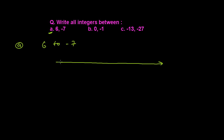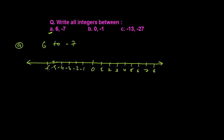If you see, the number line looks something like this. Suppose this is 0, then going right: 1, 2, 3, 4, 5, 6, 7, 8, and going left: minus 1, minus 2, minus 3, minus 4, minus 5, minus 6, minus 7, minus 8, and so on. So here our 6 is here and minus 7 is here.